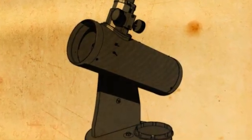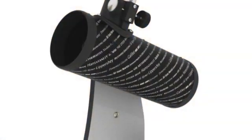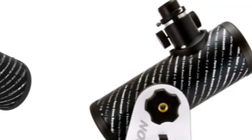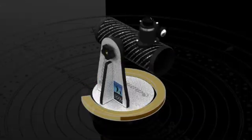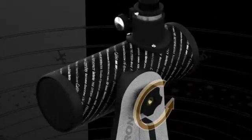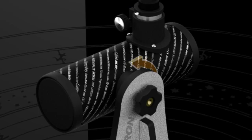True to its name, FirstScope is the ultimate beginner telescope. It is extremely easy to observe with. The user simply navigates the night sky by moving the optical tube in the direction of the desired object, making the viewing experience a snap.